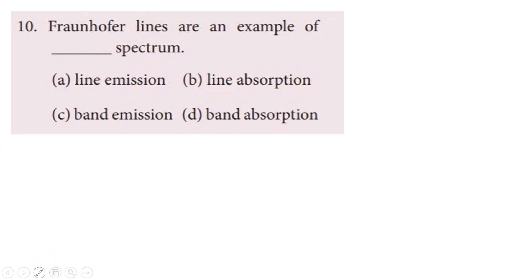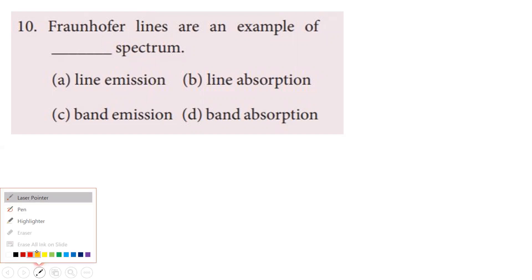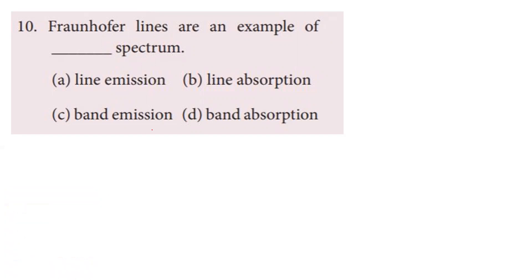Tenth question: Fraunhofer lines are an example of which type of spectrum? When sunlight passes through the sun's atmosphere, certain elements absorb radiation at specific wavelengths. Those corresponding wavelengths are absorbed, creating dark lines — this is the line absorption spectrum. Fraunhofer lines are an example of the line absorption spectrum. Option B is the correct answer.